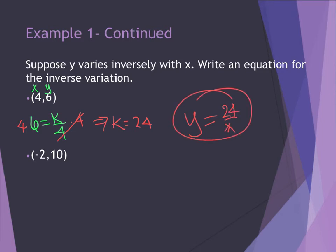For my last coordinate point, I have 10 equals k divided by negative 2. We're going to multiply both sides by negative 2.